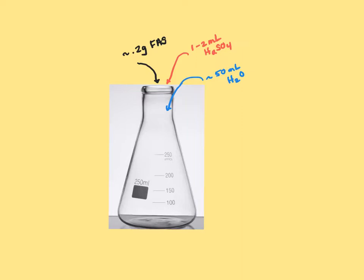So you're going to take about 0.2 grams of your FAS. It's kind of like this light green solid. And you're going to put it in your flask. You're going to add 1 to 2 milliliters of sulfuric acid and about 50 milliliters of water. Just about. It makes no difference. It could be anywhere from like 25 to 75, so just some water. So that way your solution's ready to go.